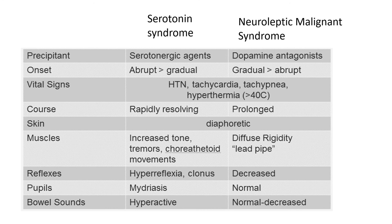When differentiating serotonin syndrome from NMS, the key things are onset and disease course. Serotonin syndrome develops rapidly — within 6 to 24 hours of the new agent — and should resolve within 24 hours of stopping the drug. NMS tends to be caused by dopamine antagonists, develops slowly over days to weeks, and recovery is prolonged. Neuromuscular features also differ: serotonin syndrome shows an excitable state with hyperreflexia, increased tone, and tremor; whereas NMS presents with 'lead pipe' rigidity, decreased reflexes, and a wooden quality to movements.